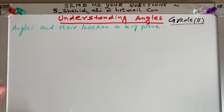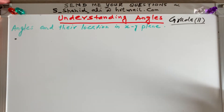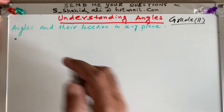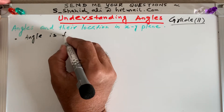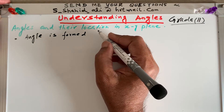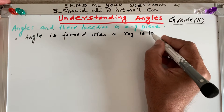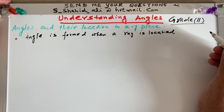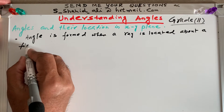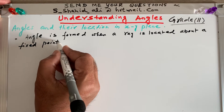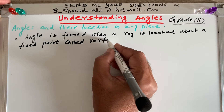So what we need to understand here are basic definitions. An angle is formed when a ray is rotated about a fixed point. That fixed point is called the vertex.